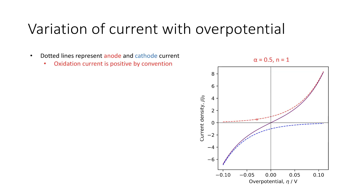Now let's look at how current varies with overpotential. This graph shows the anode rate and the cathode rate — the oxidative current in red on the top, which by convention is positive, while the cathode current, the reduction, is shown in blue. The sum of these two curves, shown as the purple line up the middle, shows what direction the current flows as we apply different overpotentials to our cell. The overpotential is simply the difference between the equilibrium potential and the potential we're applying. Very rapidly, as we get to extreme values of overpotential, one component begins to dominate. Where eta is plus or minus 0.1 volts, we generally get one term dominating.